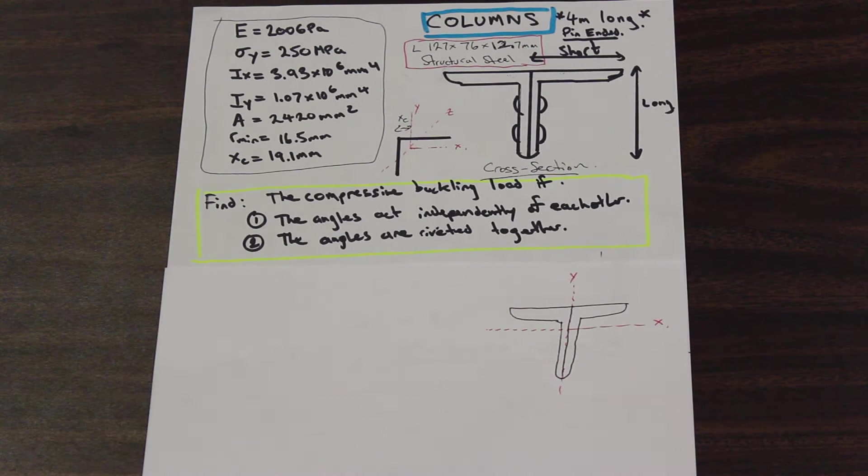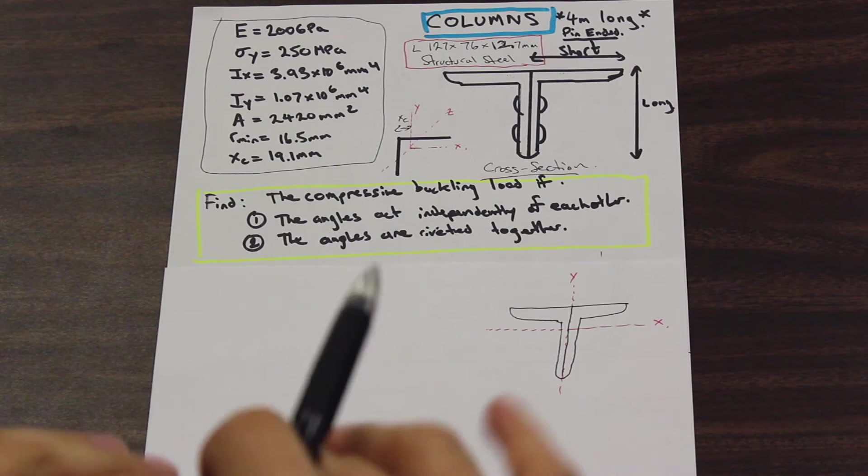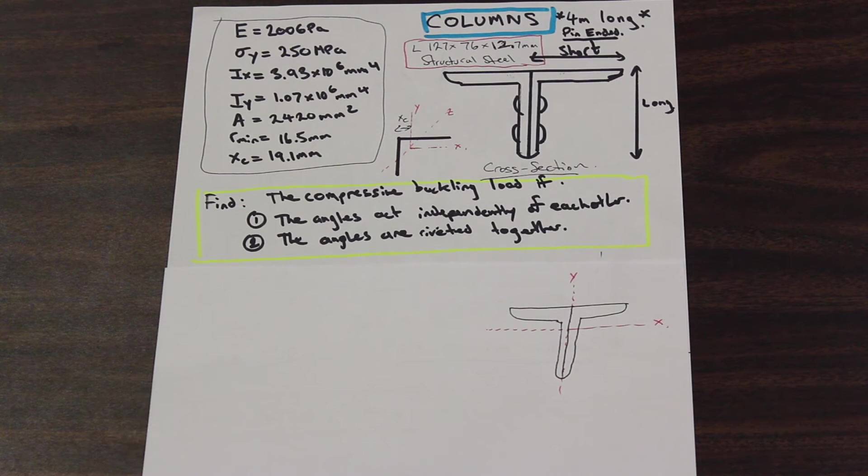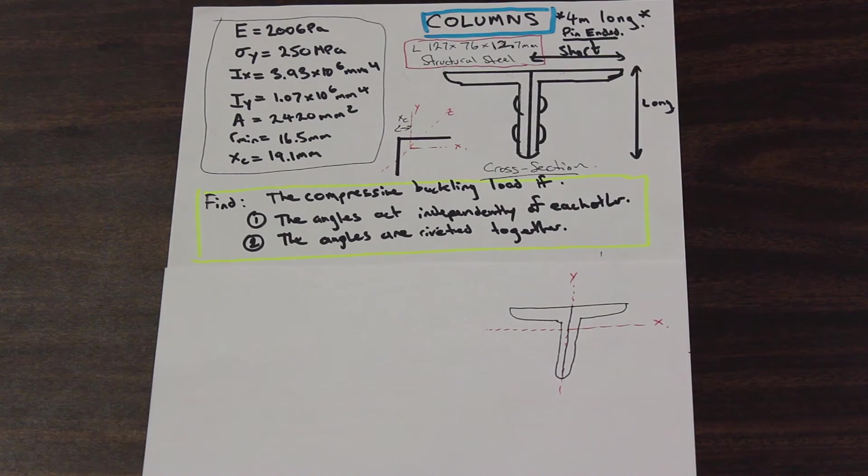They're essentially, they become a unit. Now what we're working with is instead of two independent L-shaped columns, we have a single column, a single piece here, which means our moment of inertia is going to change.